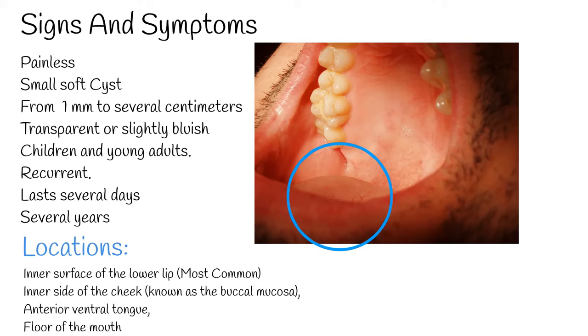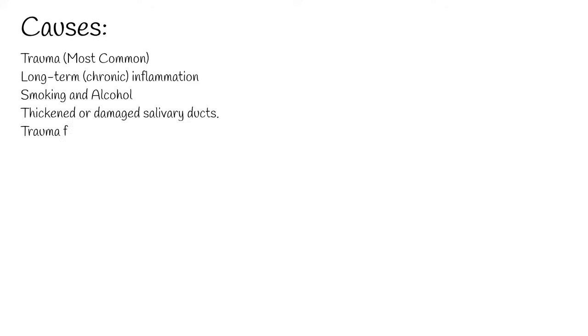Mucoceles are more common in young adults; 70% of cases are diagnosed before age 30. Trauma is the most common cause. One of the most frequent causes of trauma is biting your lip while chewing. Other causes include long-term chronic inflammation due to smoking or using tobacco products.